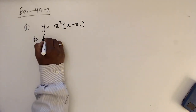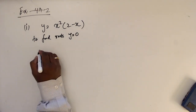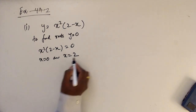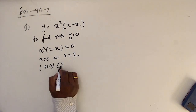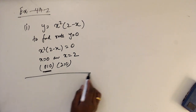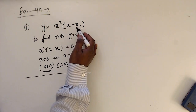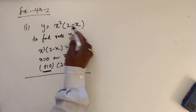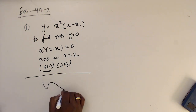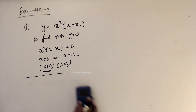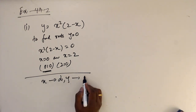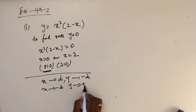For question I, to find roots make y equal to 0: x squared times (2-x) equals 0. So x equals 0 or x equals 2. This gives a repeated root at 0 and a simple root at 2: points (0, 0) and (2, 0). The coefficient of x cubed is negative, so I'm expecting x going to positive infinity means y goes to negative infinity, and x going to negative infinity means y goes to positive infinity.